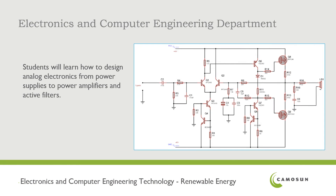Students will learn how to design analog electronic systems. The schematic shown on the screen is a power amplifier — something like a 50 watt MOSFET power amplifier driving a loudspeaker, a single channel for left or right. There's an input stage that's differential to amplify the signal, and then a driver stage prior to the MOSFETs to drive the appropriate signal to the MOSFETs.